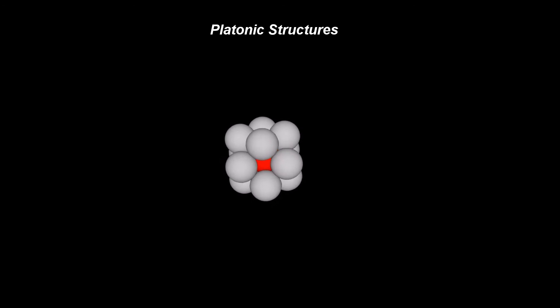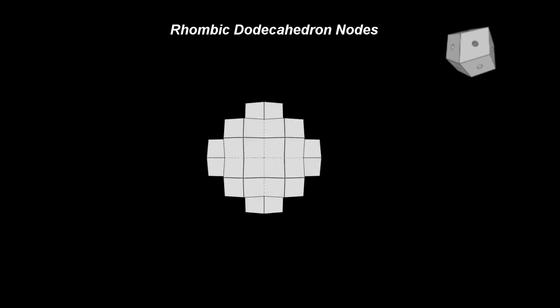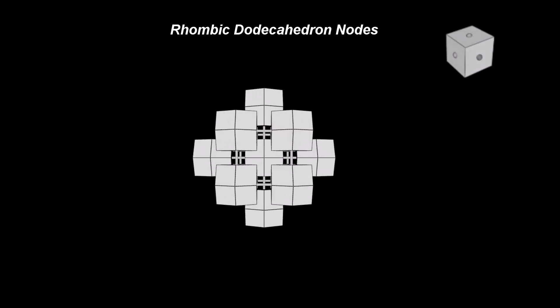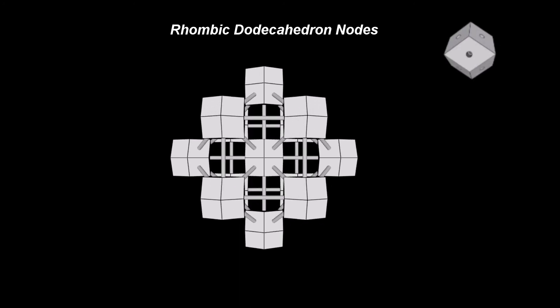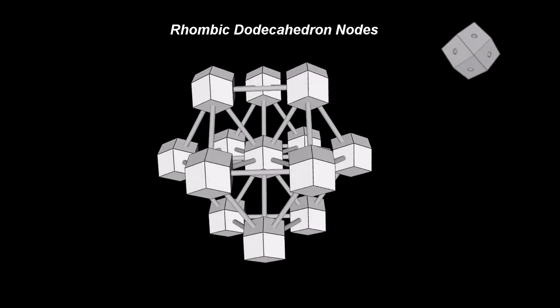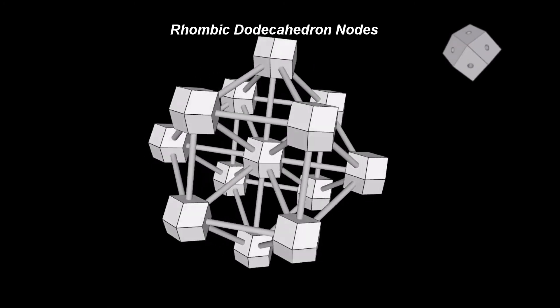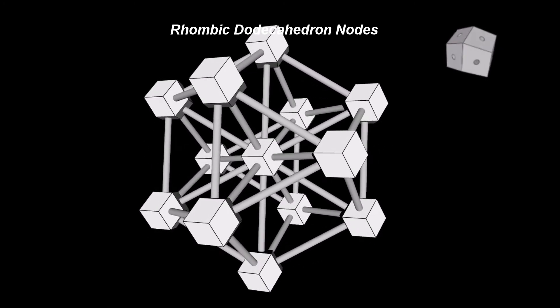From a practical point of view, the rhombic dodecahedron is a better choice when building physical structures. Its 12 faces help us better see the 12 directions. This is the node that is used to assemble platonic structures.